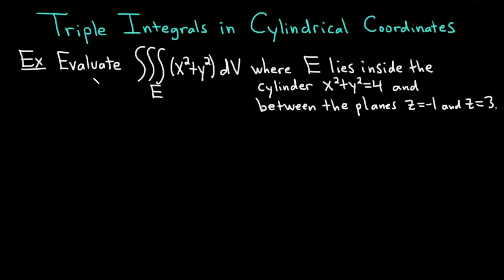The question reads, evaluate the triple integral of x squared plus y squared, where E lies inside the cylinder x squared plus y squared equals 4, and between the planes z equals negative 1 and z equals 3.